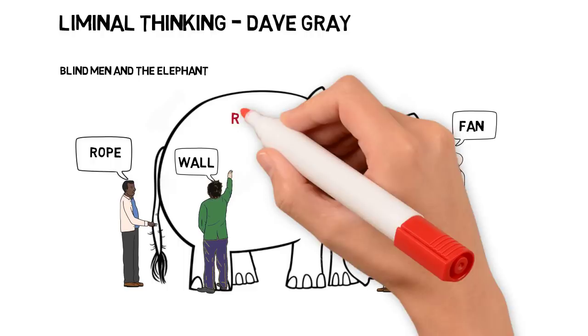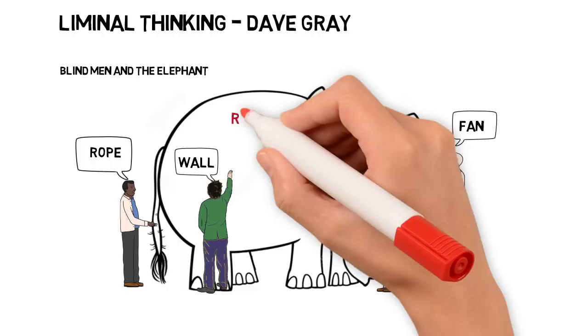So what's the point of this story? We've heard it many times. The elephant is reality and the point of the story is that we're all blind. We're all seeing aspects of reality and we're not able to agree because each of us is seeing a truth, a piece of the truth. In fact, all of these blind men are saying things that they believe are true, but none of them has the whole truth.